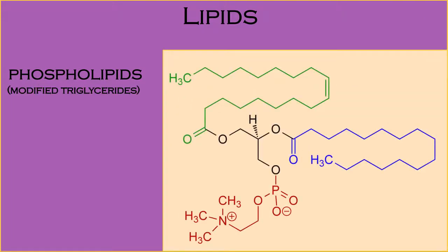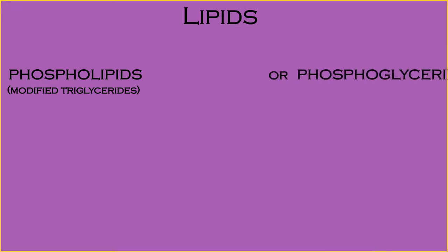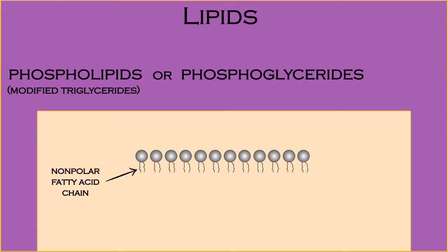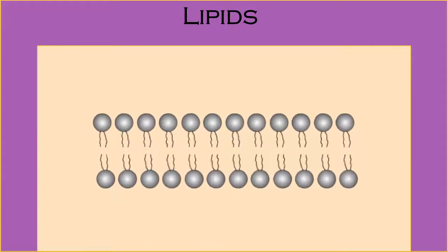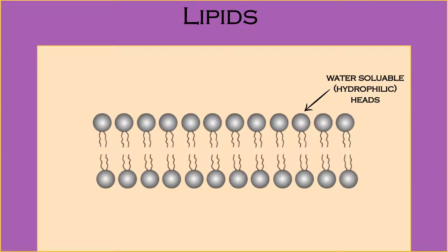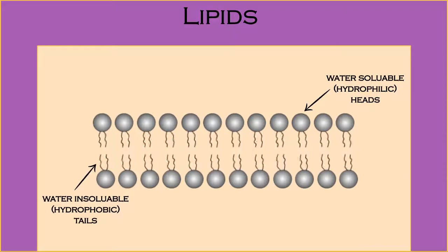Phospholipids are modified triglycerides, where a phosphate group replaces one of the fatty acid chains. Phospholipids, or phosphoglycerides, have a nonpolar fatty acid chain portion and a phosphate polar portion. Two layers of phospholipids are the chief component of all cell membranes. In a cell membrane, the two layers self-assemble so that their water-soluble heads, or hydrophilic heads, form the surface and interior of the membrane, and the water-insoluble tails, or hydrophobic tails, face each other.